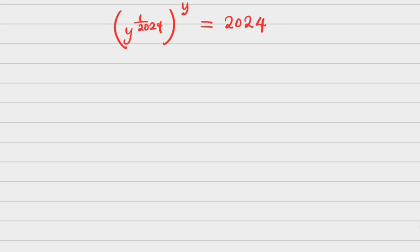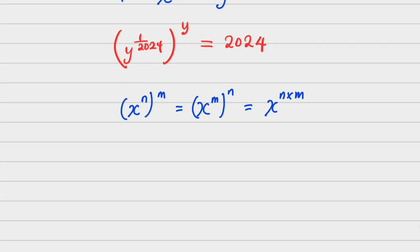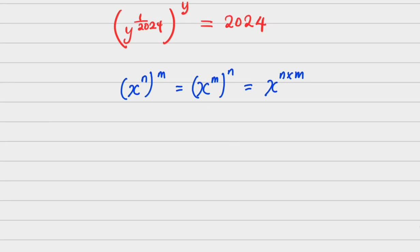If you have good knowledge of indices, you'll note that (x^n)^m can be written as (x^m)^n because they both equal x^(n×m). Because of this, I will now rewrite the expression on the left-hand side.